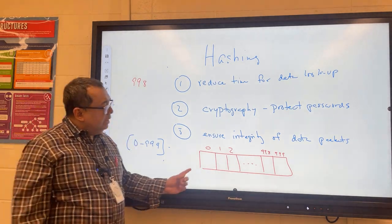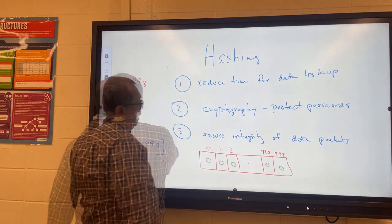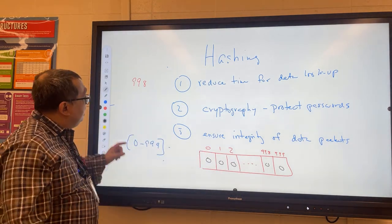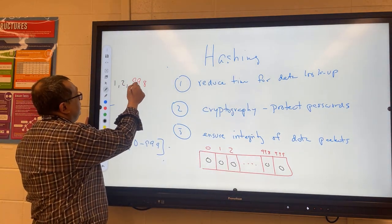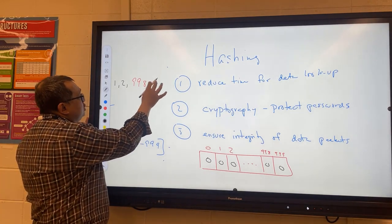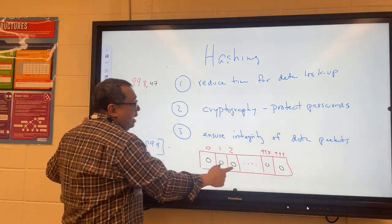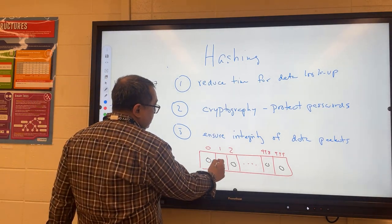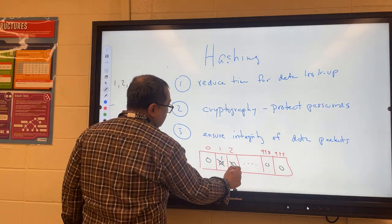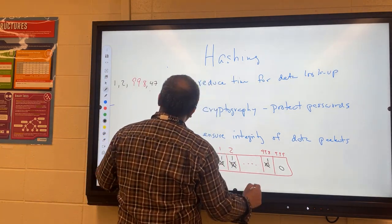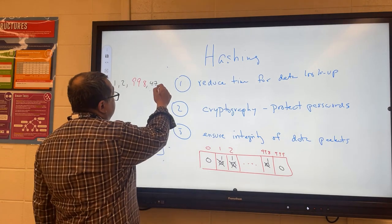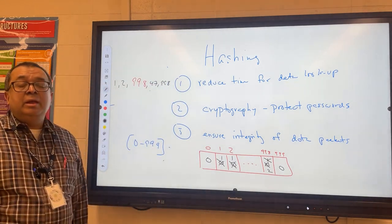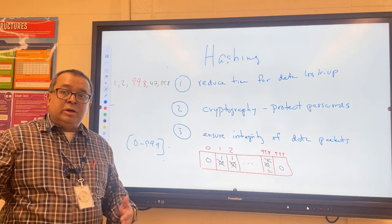I start this array with all zeros. Each time I come across a number in my stream, I simply increment the corresponding index. So for a stream like 1, 2, 3, 998, 47, and so on — when I get to 1, I change that index to a 1; when I get to 2, I change that to a 1; when I get to 998, I change that index to a 1; when I get to 47, I change that to a 1. If there happens to be another 998, I go to that index and change it to a 2.